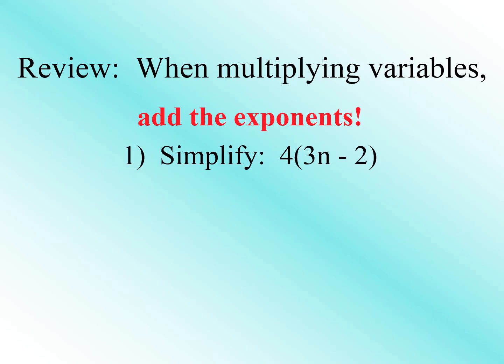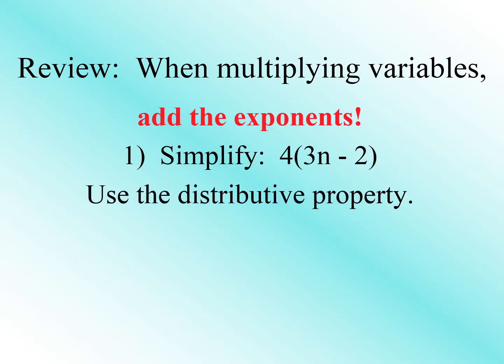Let's have the first example. Simplify: 4 times the quantity (3n minus 2). Here, we will use the distributive property. We distribute the 4 to the terms inside the parentheses, which is (3n minus 2). So we have 4 times 3n minus 4 times 2.